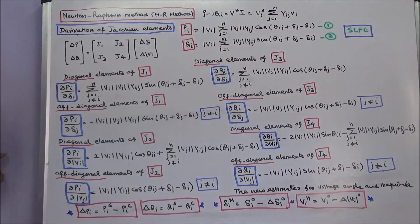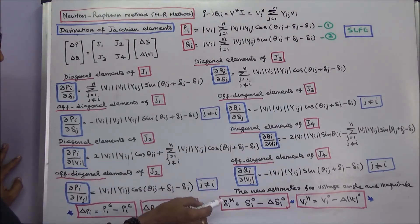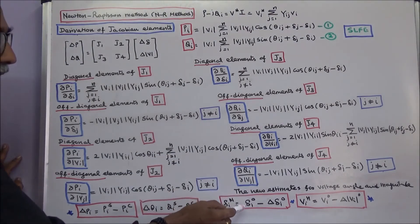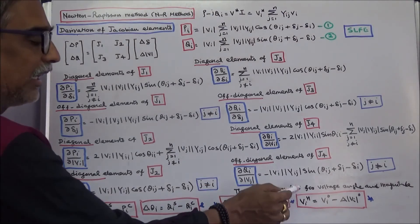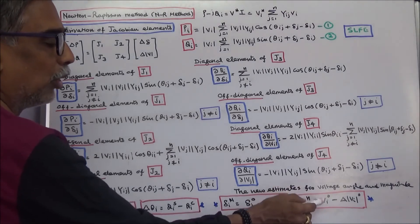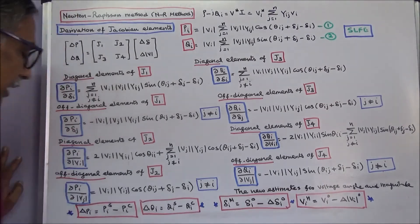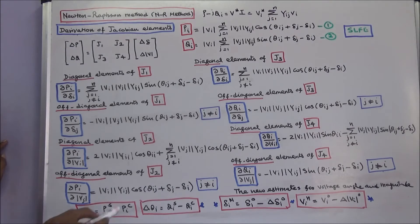The new estimates for voltage angle and magnitude: δi(new) is equal to δi(old) minus Δδi, and Vi(new) is equal to Vi(old) minus ΔVi. The change in real power ΔPi is equal to Pi(scheduled) minus Pi(calculated); similarly the change in reactive power ΔQi is equal to Qi(specified) minus Qi(calculated).